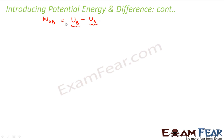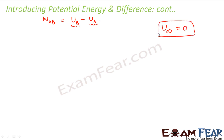So we will define a position where we follow the convention of considering the potential energy as zero. For example, when we talk about gravitational potential energy at the surface of the earth we say that the gravitational potential energy is zero — that is a standard convention. Similarly, in the case of electrostatic potential energy, we say that the electrostatic potential energy at infinity is zero. This is the standard convention which we follow.